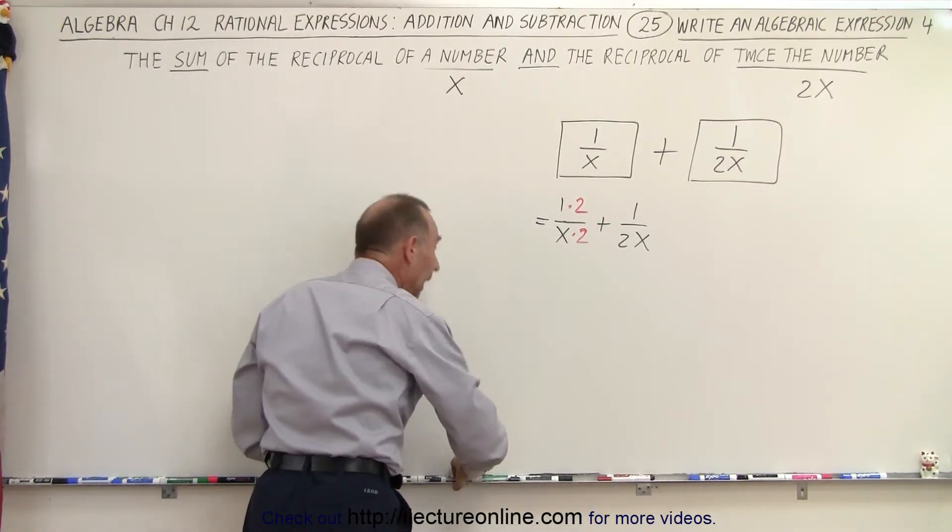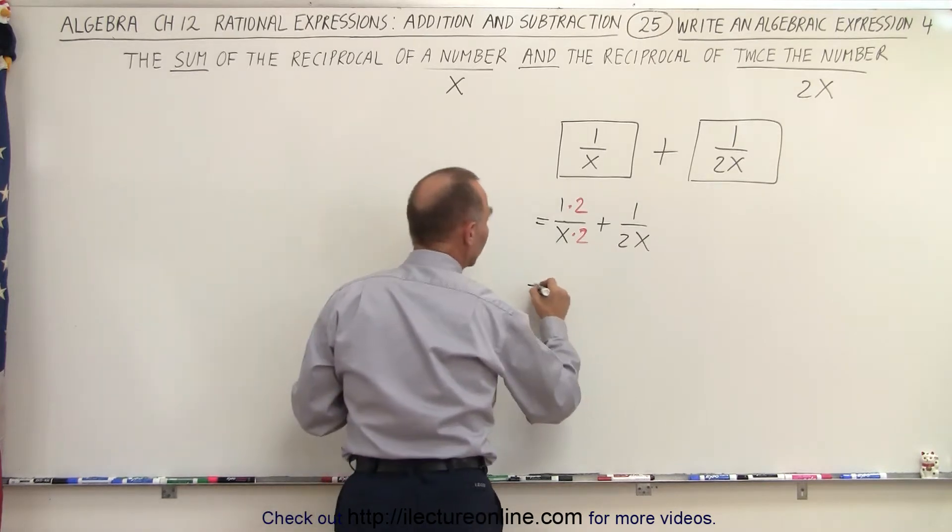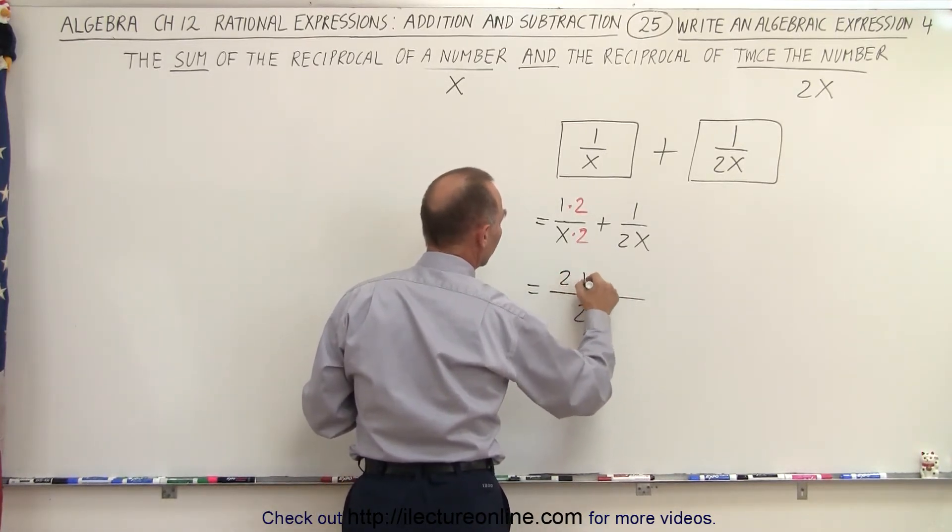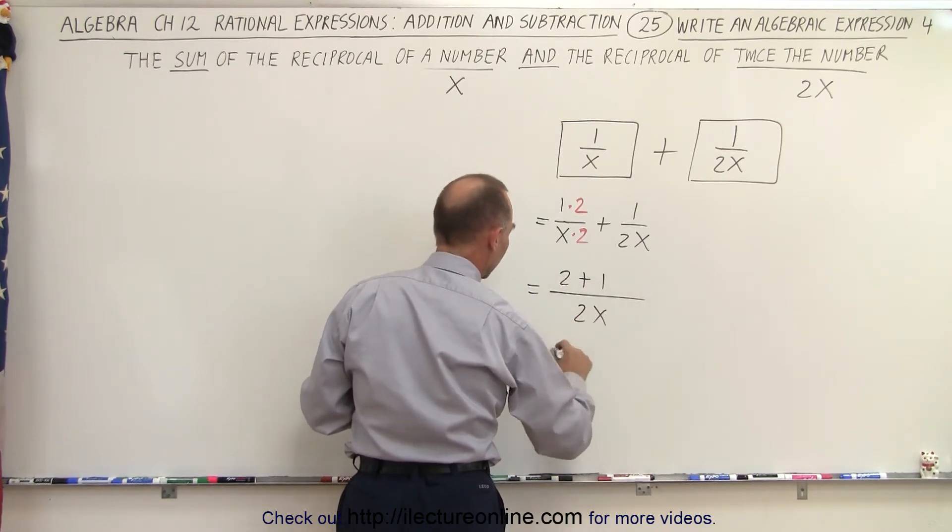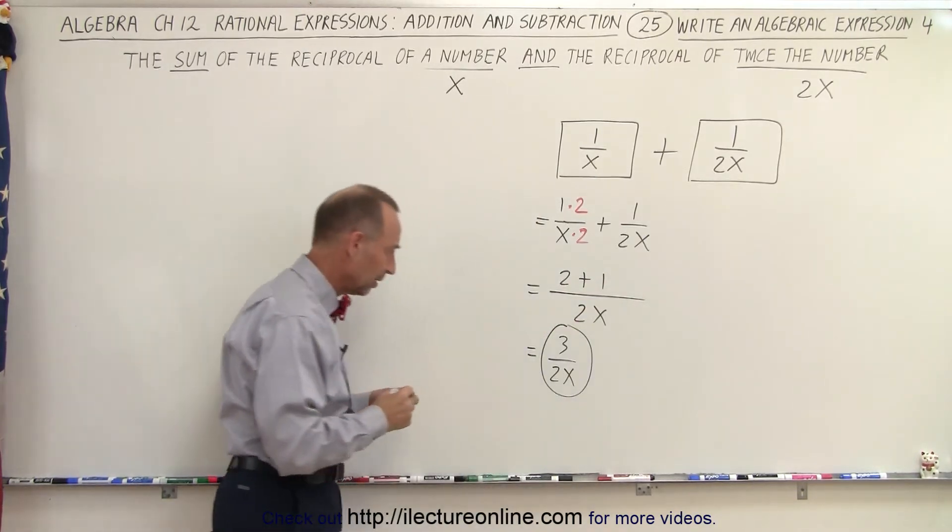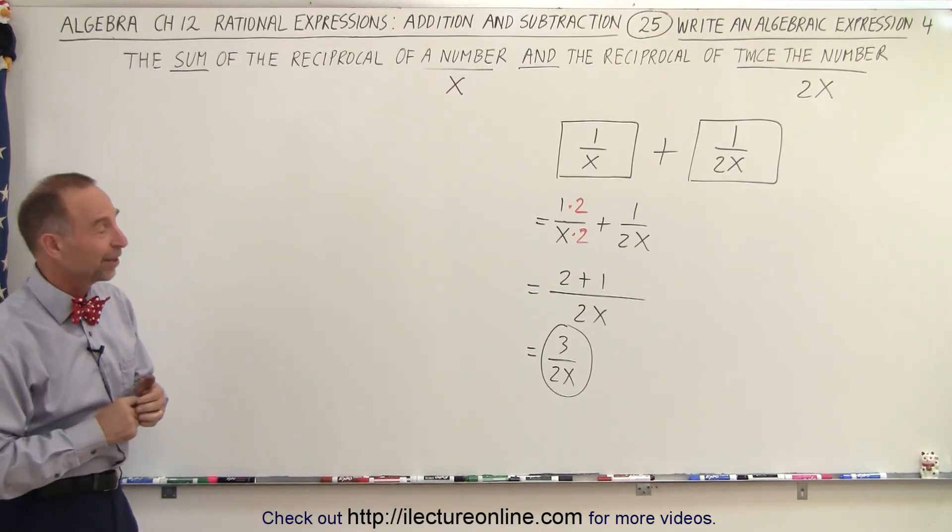There we go. And that means we end up with a common denominator of 2x. And in the numerator we have 2 plus 1. And of course that's equal to 3 over 2x as the final expression of that sum. And that is how it's done.